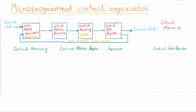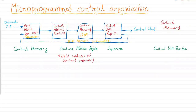Whatever instruction we want to execute, the details of that instruction will be specified by the control address register. The control address register holds the address in control memory for fetching the control instruction. This control instruction, also called a micro instruction, will specify some operation to be performed.